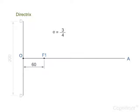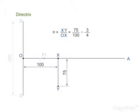The eccentricity is given as 3 by 4. Select a point X on OA such that OX is 100 mm. From X draw a line XY perpendicular to the axis OA such that XY is 75 mm. The ratio of XY by OX is 75 by 100 is equal to 3 by 4.